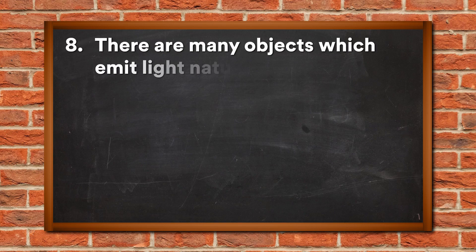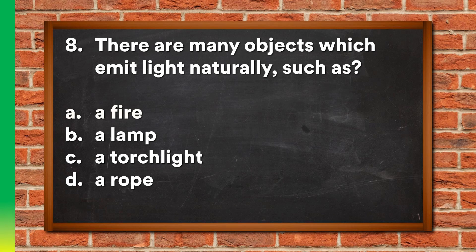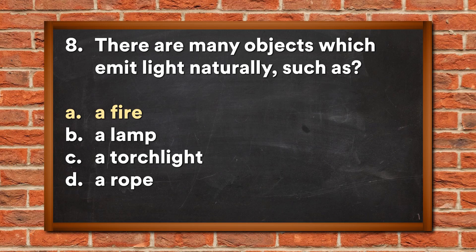Question 8: There are many objects which emit light naturally, such as: A. A fire, B. A lamp, C. A torchlight, D. A rope. The answer is A, a fire.